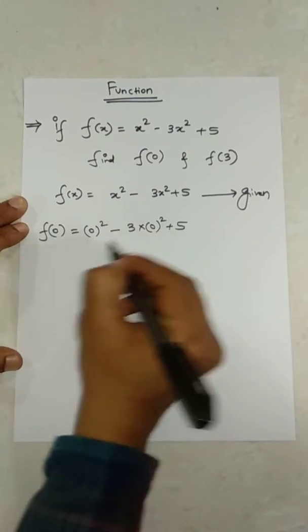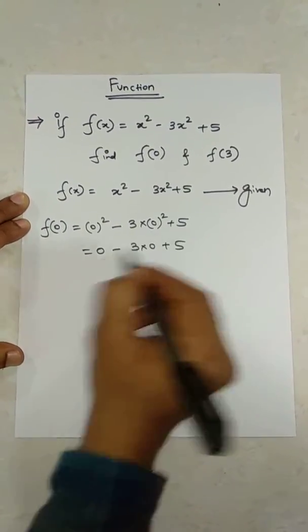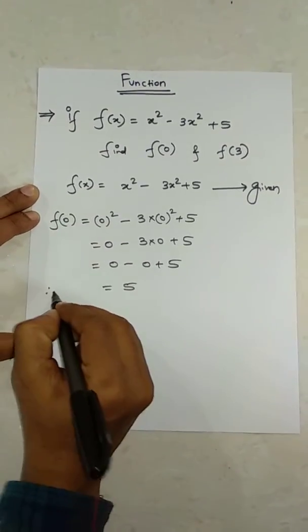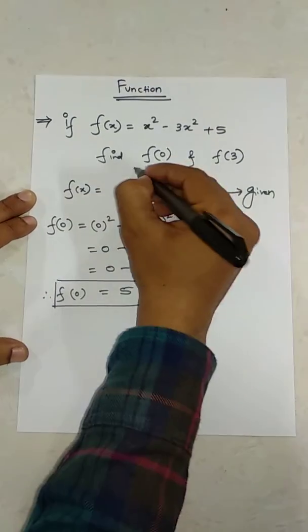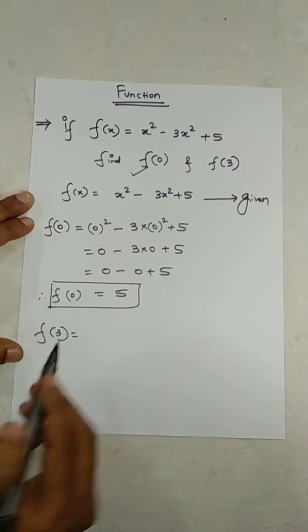0 minus 3 into 0 plus 5, which is 0 minus 0 plus 5. It will be equal to 5. Therefore, f(0) equals 5. In the same way, f(3) will be equal to the same equation, only x replaced with 3.